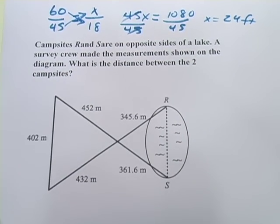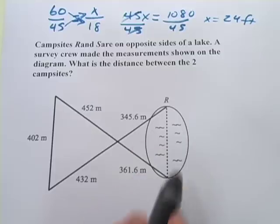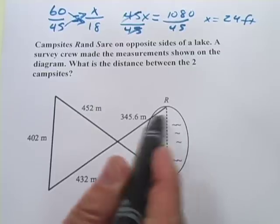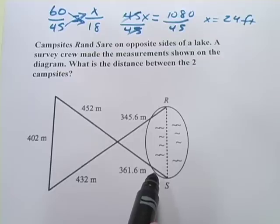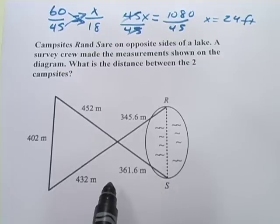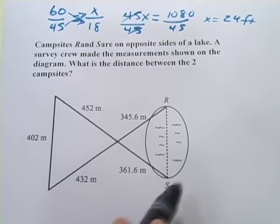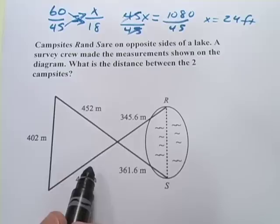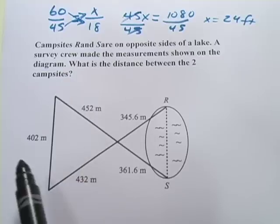This one says campsites R and S, so this and this, are on opposite sides of a lake. A survey crew made the measurements shown on the diagram. Kind of a crazy diagram. We've got this bow tie situation. What is the difference between the two campsites?